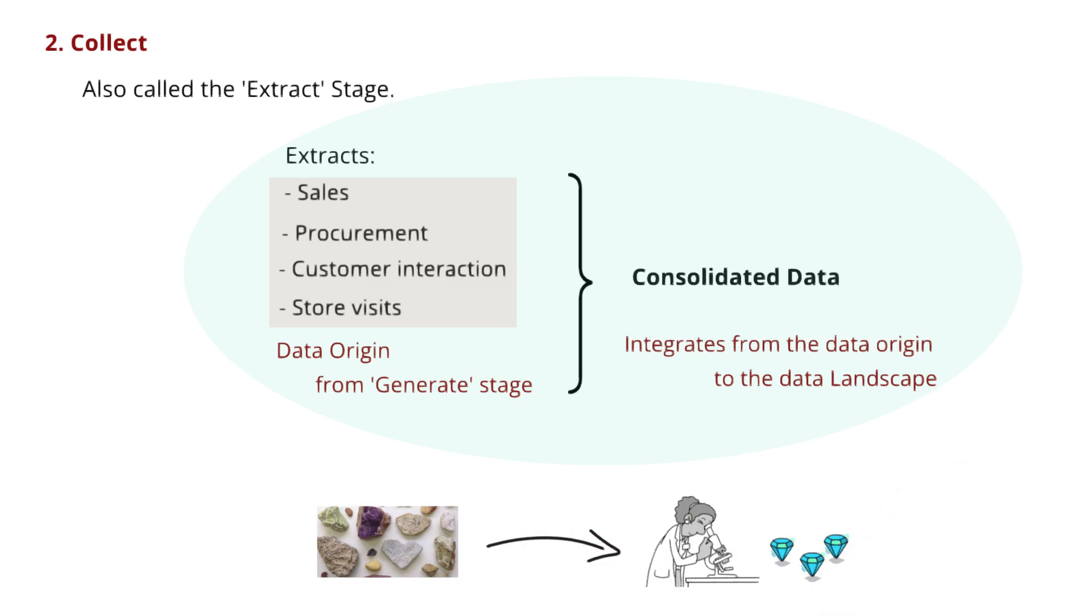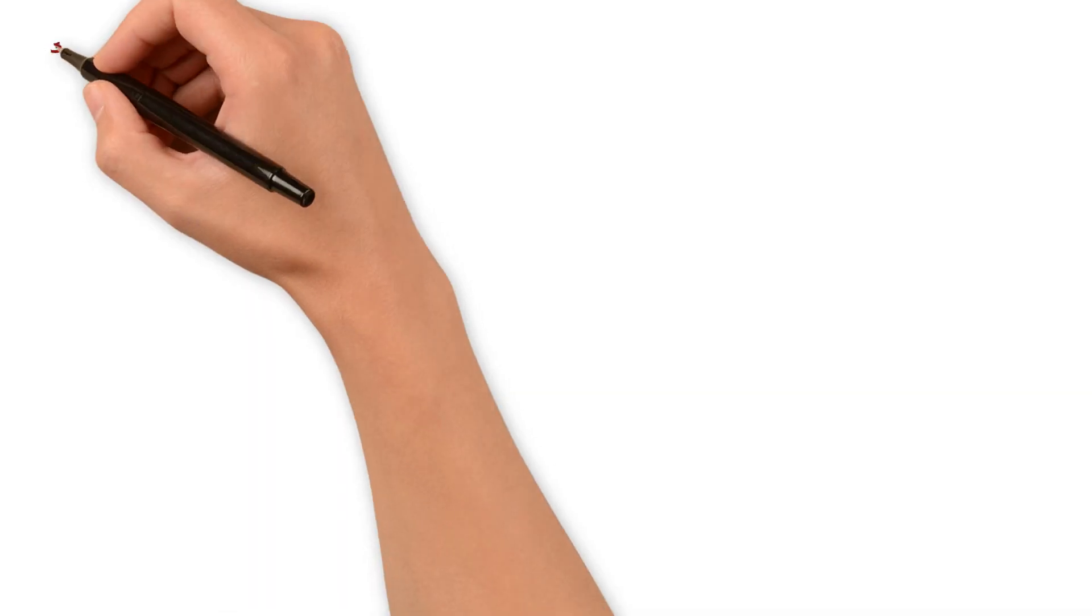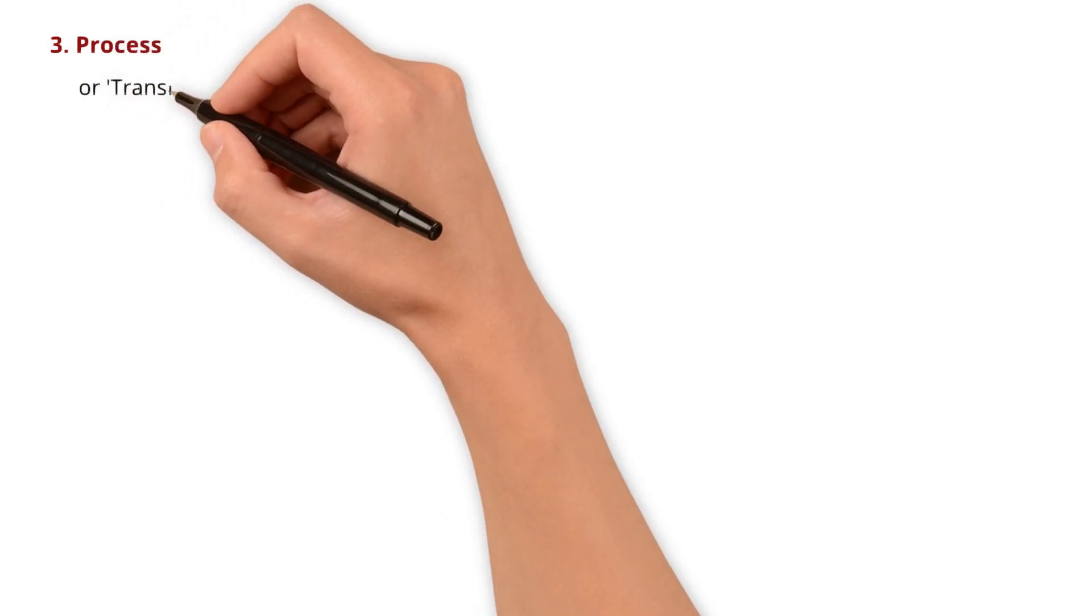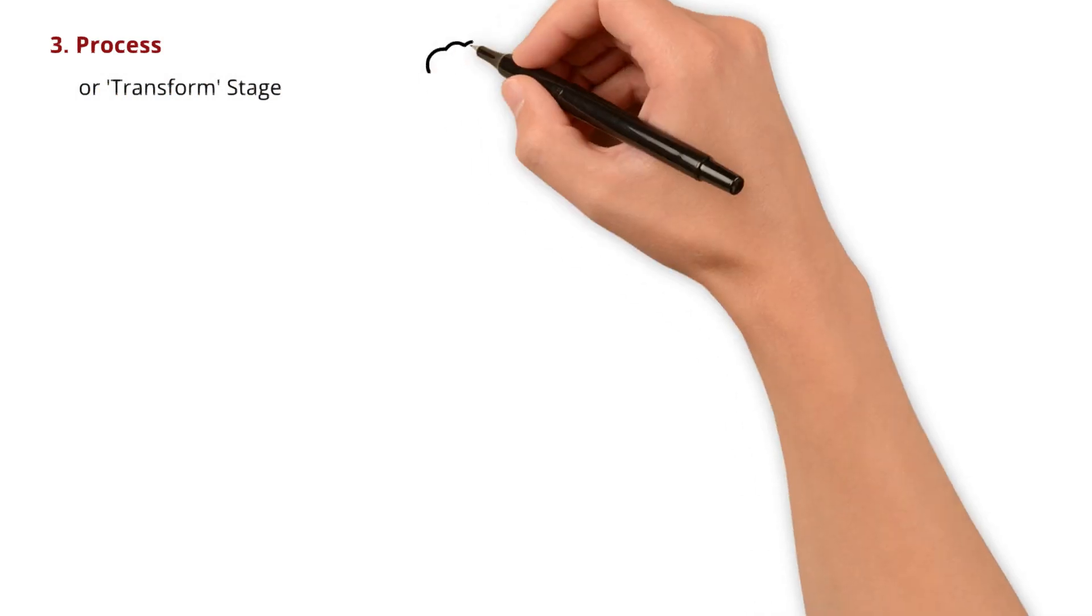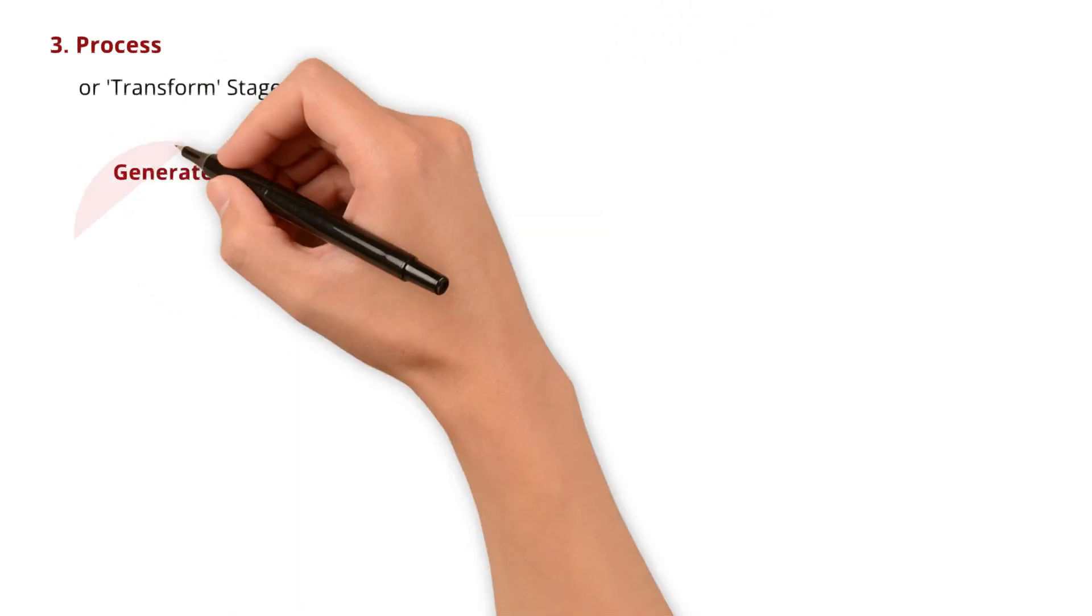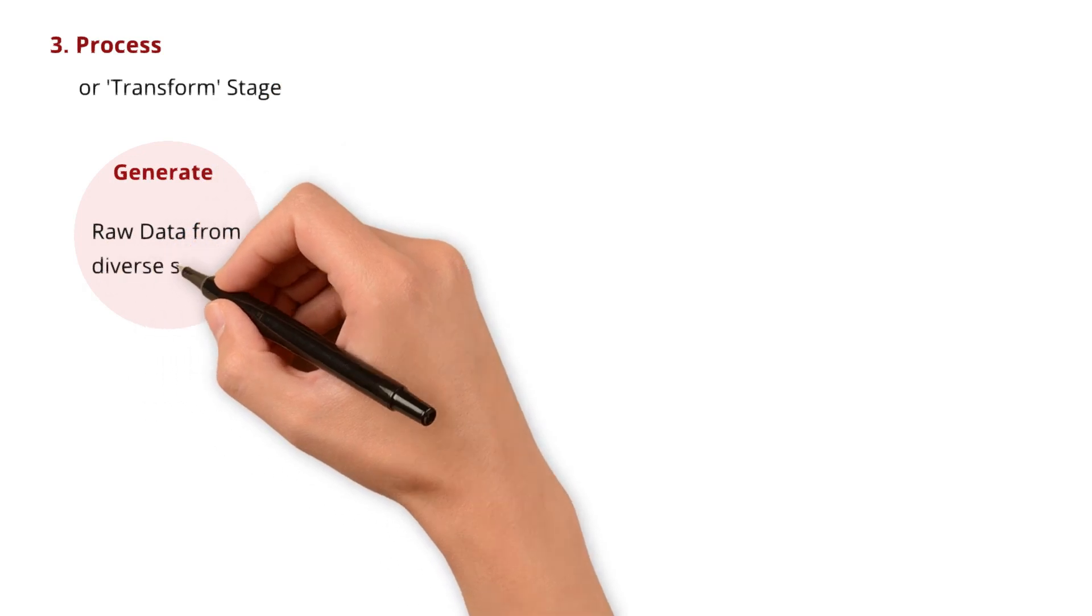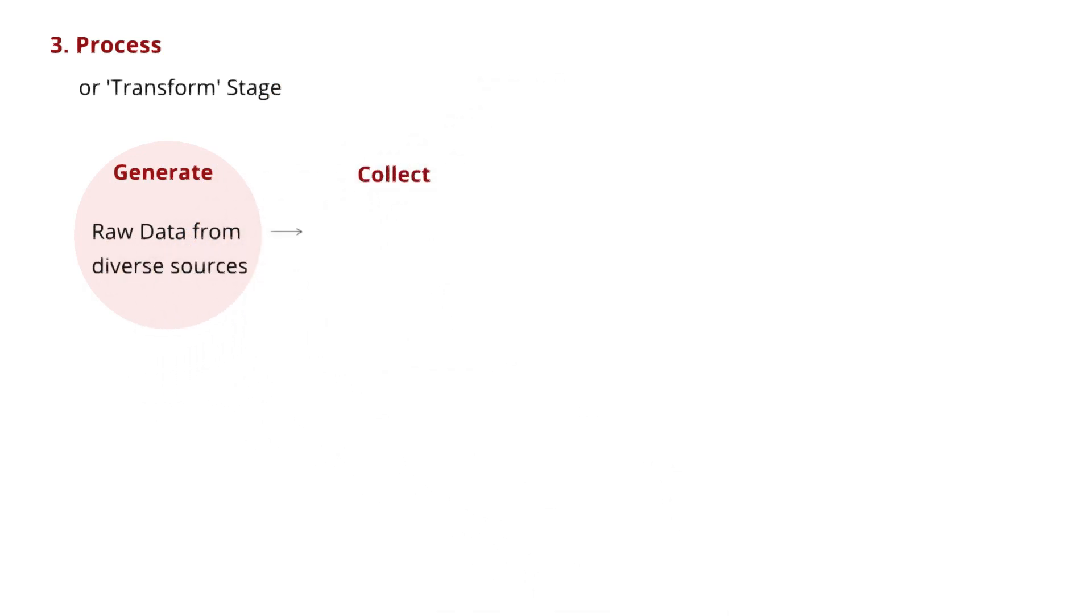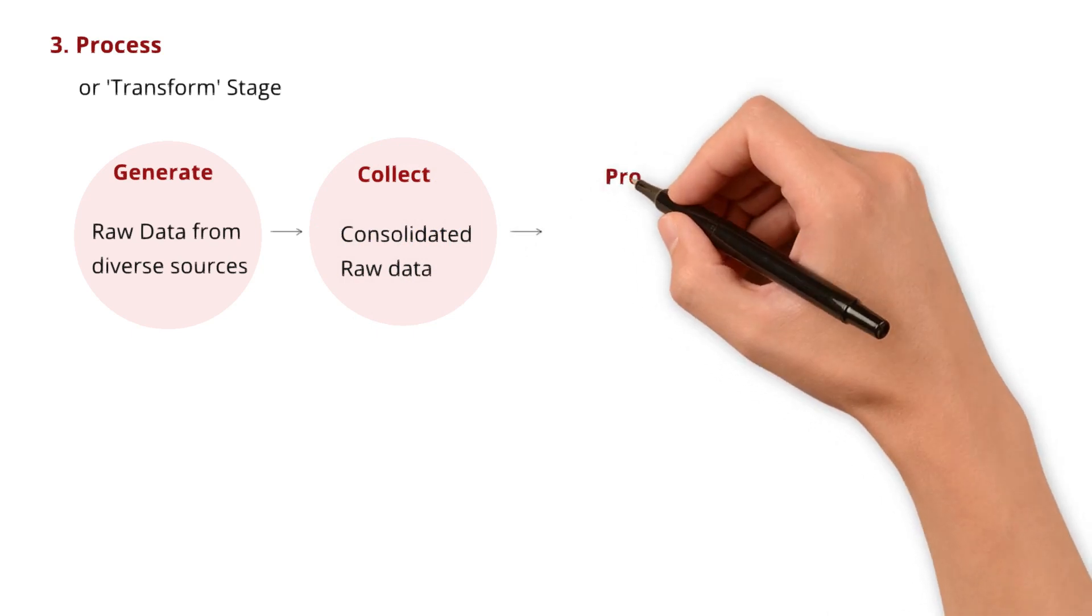Next up, we are heading to the process stage. The process stage is also known as the transform stage. Before we dive into the details of the process stage, let's take a step back for a quick recap of the previous two stages. The output of the generate stage, that is raw data from diverse sources, is fed as the input to the collect stage. Similarly, the output of the collect stage, that is consolidated raw data, is fed to the process stage.